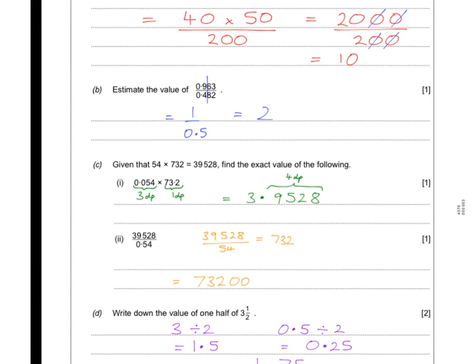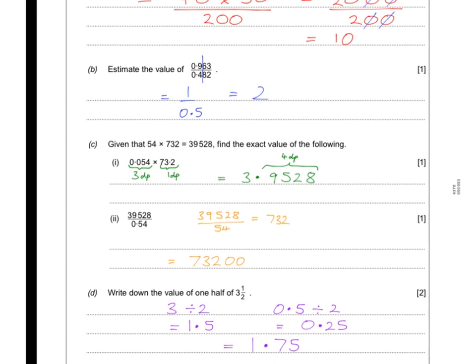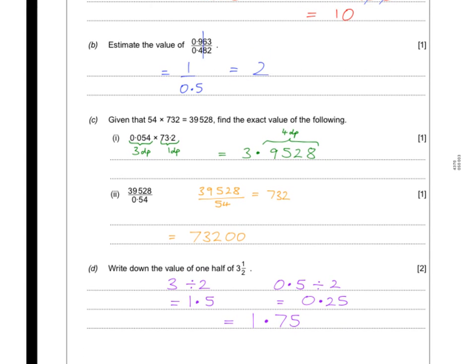This one here caused a lot of headaches: what is one half of 3 and a half? Split your components up like you've been taught since Year 7. You've got 3 and a half. What's half of 3? 1.5. What's half of 0.5? 0.25. Put those two things back together and you get 1.75.